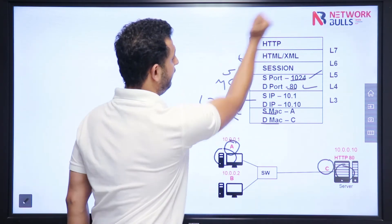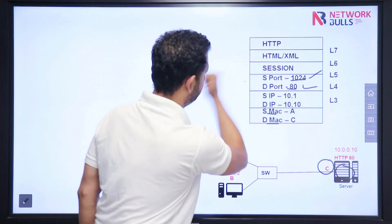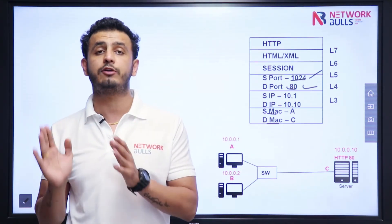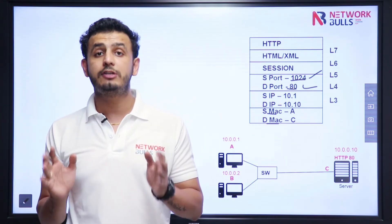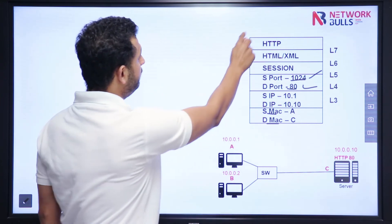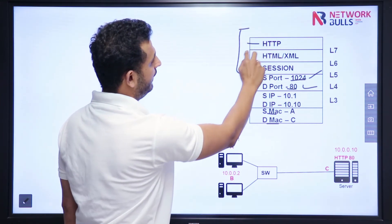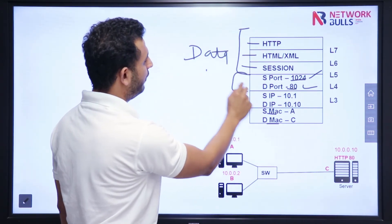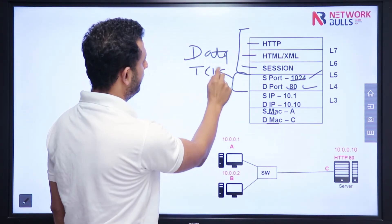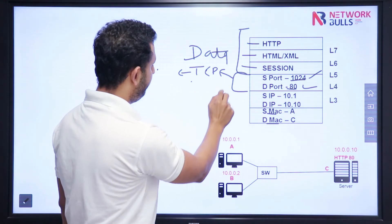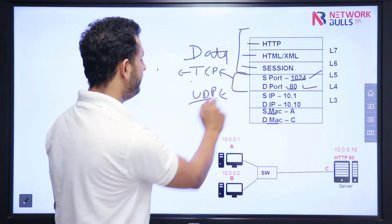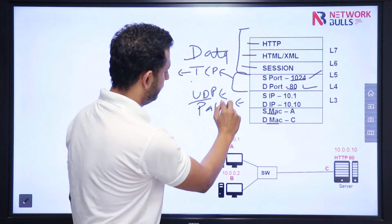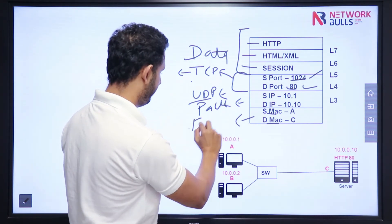Now let's discuss PDU — Protocol Data Unit — which is the form of data at each layer. The PDU for the first three layers — Application, Presentation, and Session — is simply called data. For the Transport Layer, if we use TCP it is called a segment; if we use UDP it is called a datagram. At the Network Layer we call it a packet, and at the Data Link Layer we call it a frame.